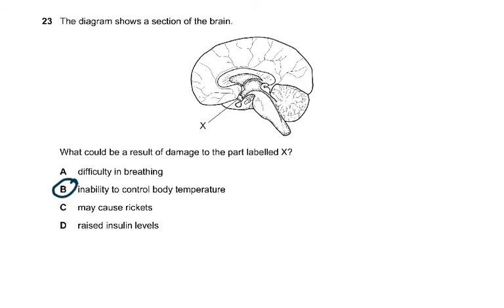Question 23: the diagram shows a section of the brain. What could be a result of damage to the part labeled X? X is the hypothalamus, so that would be inability to control body temperature because the hypothalamus controls the thermoregulation and osmoregulation.